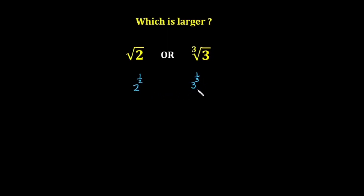To compare the numbers, we need the same base. In this case we cannot make the same base by multiplying with any numbers. The second option is to make the same exponent, but we cannot make the same exponent by multiplying any numbers either. So the third option is to make the exponent a whole number.